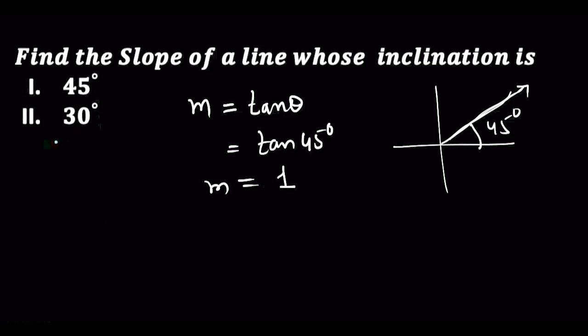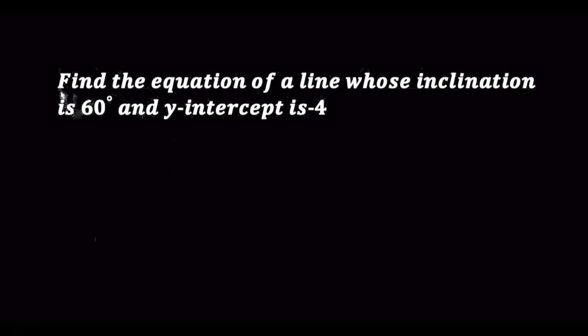The second part: m is equal to tan theta, tan 30 degrees. Tan 30 degree value is 1 upon root 3. So 30 degree slope is 1 upon root 3, and 45 degree slope is 1.